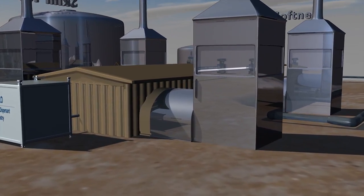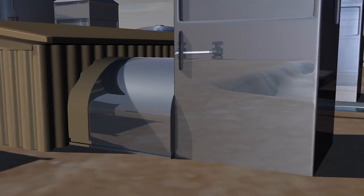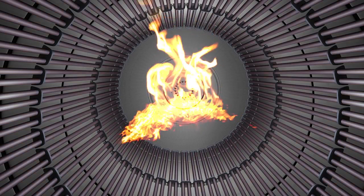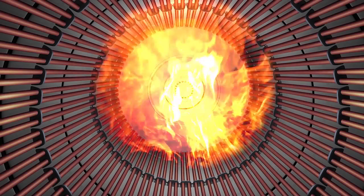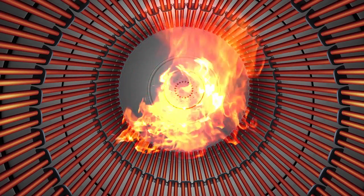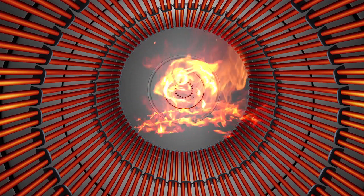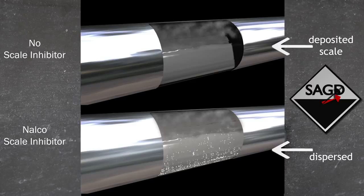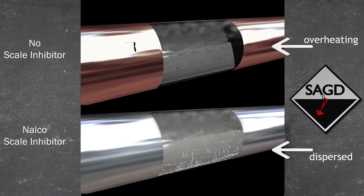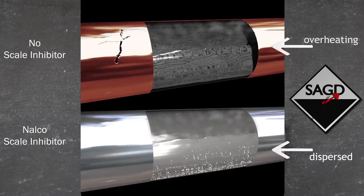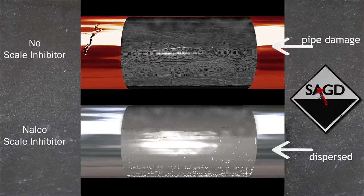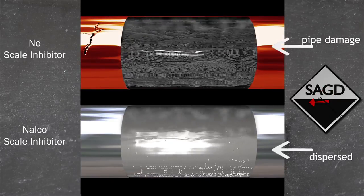SAG-D operators are continuously challenged with optimizing their facilities to reach production target rates and profitability. Scale deposition inside the once-through steam generators can result in poor heat transfer and potential overheating of the pipelines that can lead to equipment damage.